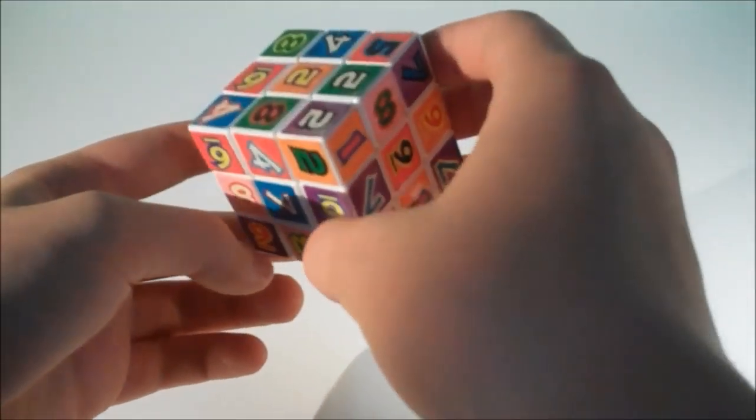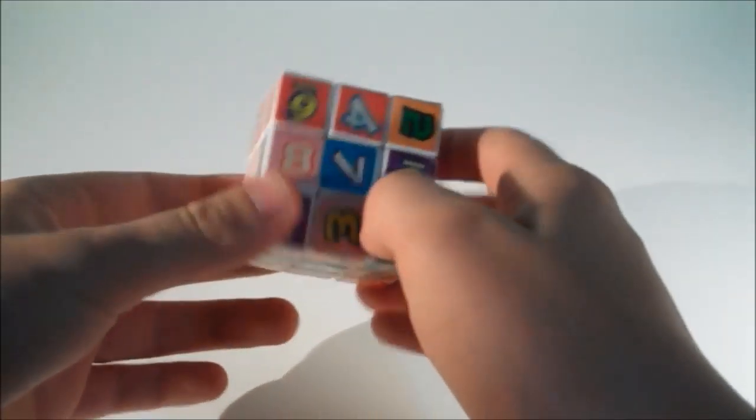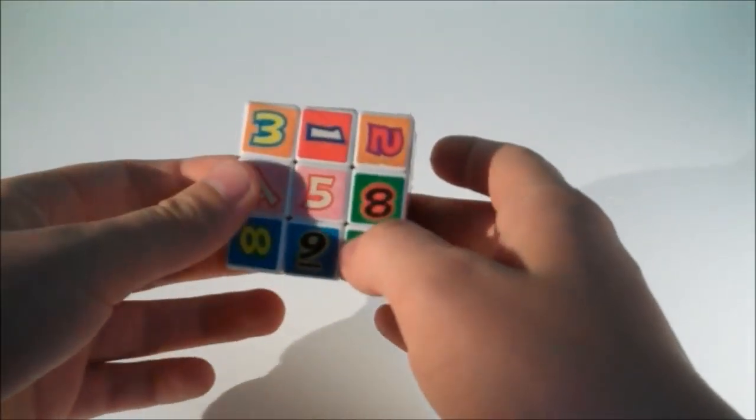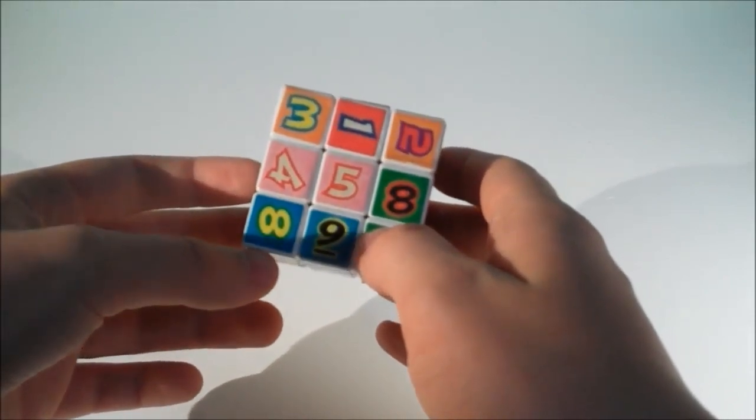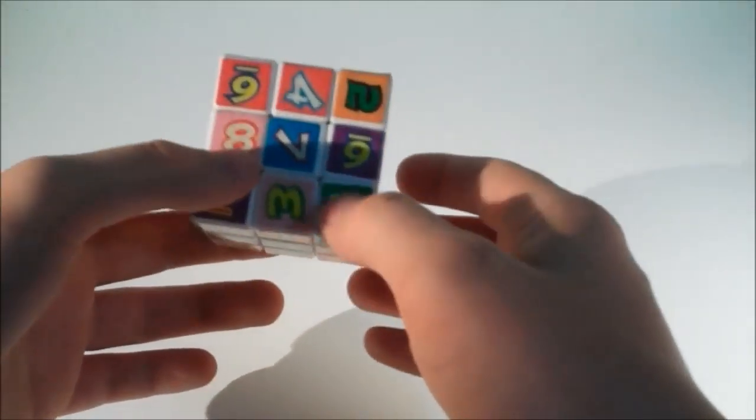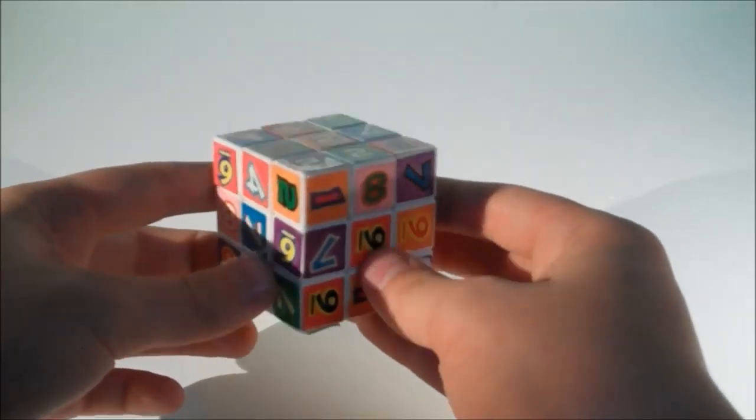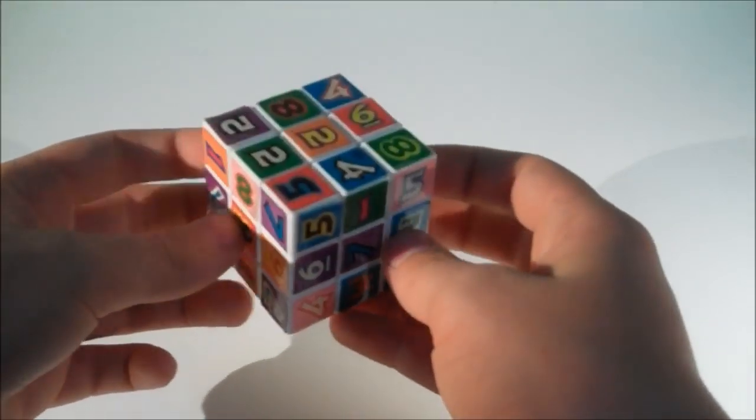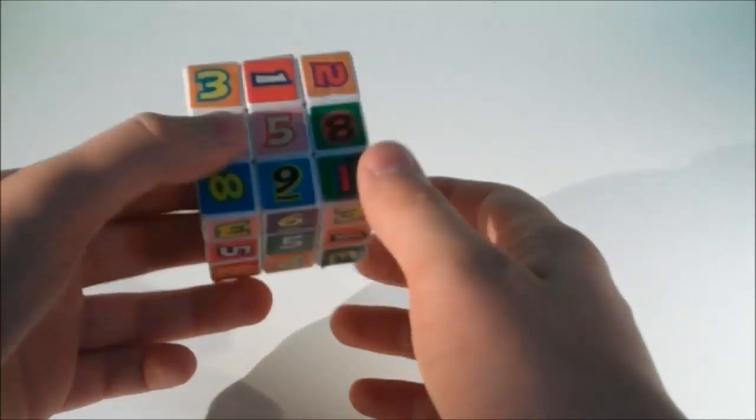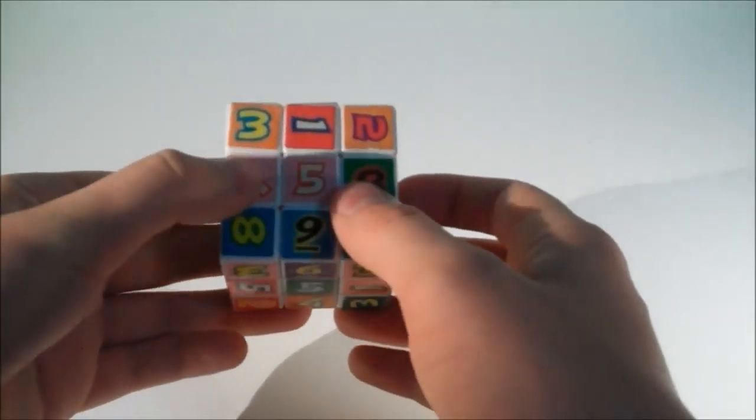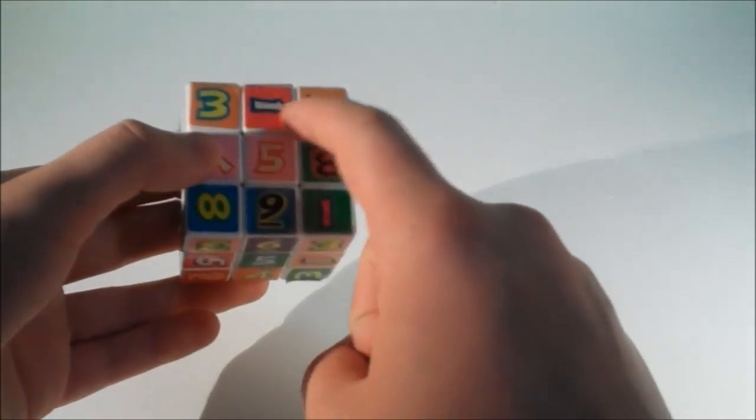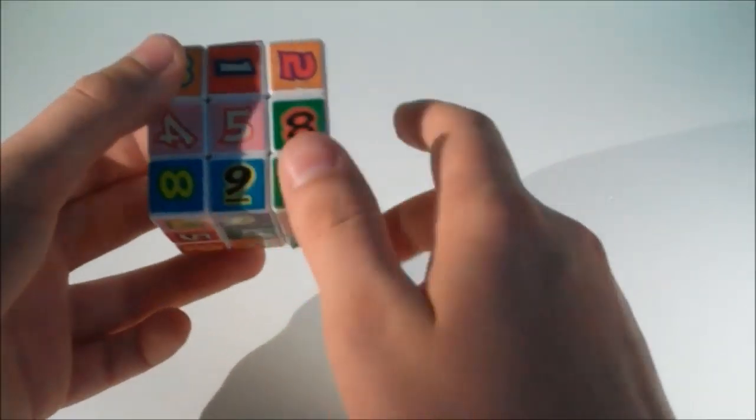This is a Sudoku cube. This puzzle is just a 3x3, but look at the stickers. Each piece has either one, two, or three numbers which are mostly all facing different ways. So how are we going to solve this? Well, we need to solve it so that on each face we have only one of each number, all facing the same way, and all the way around the cube there aren't any repeated numbers in a row.